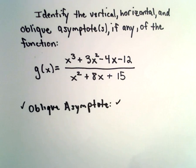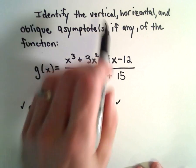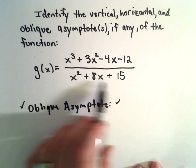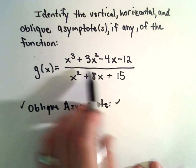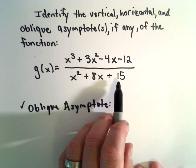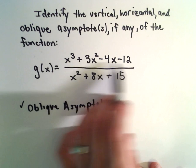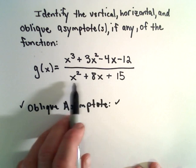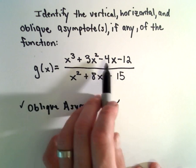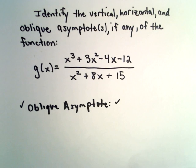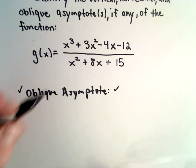To get the vertical asymptotes, I'm going to start by factoring the denominator, figure out what makes that zero, if anything. Then I'm also going to factor the numerator, see if any of the values that make the denominator zero also make the numerator zero. Because if that happens, then they're not vertical asymptotes.